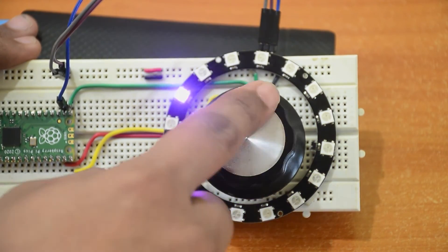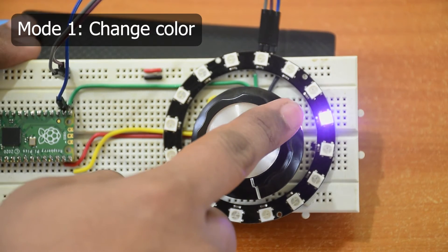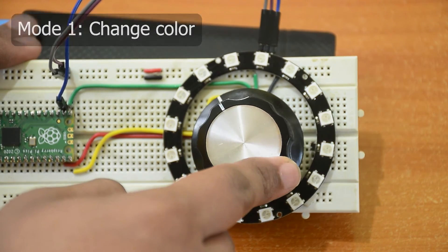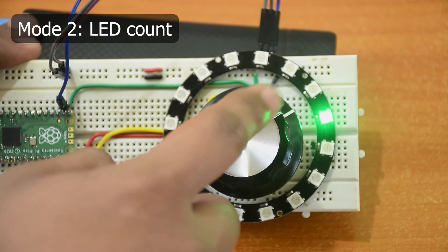At first, rotating the knob rotates the light. Press once to change the mode. First mode is to change the color - feel free to add more colors to the code. Press again to set the number of LEDs.